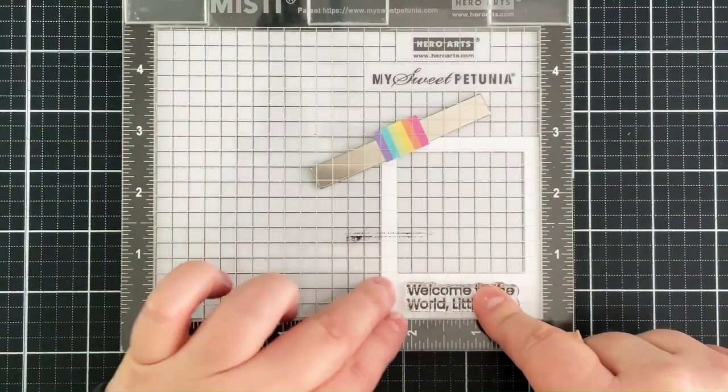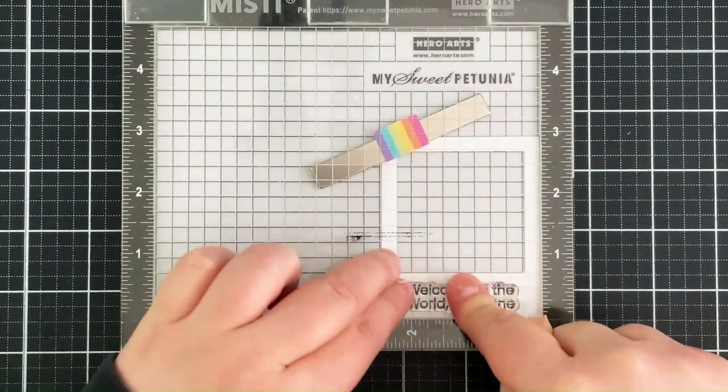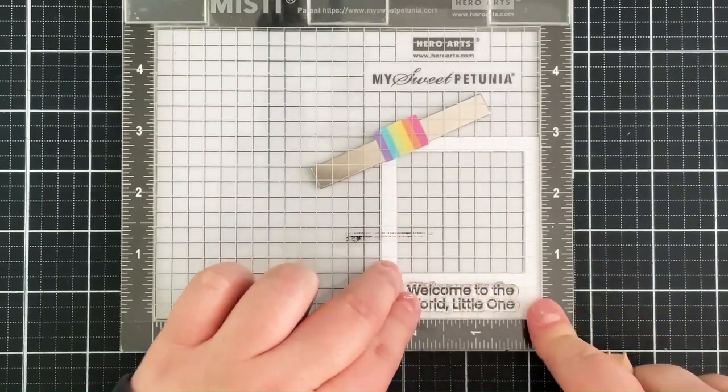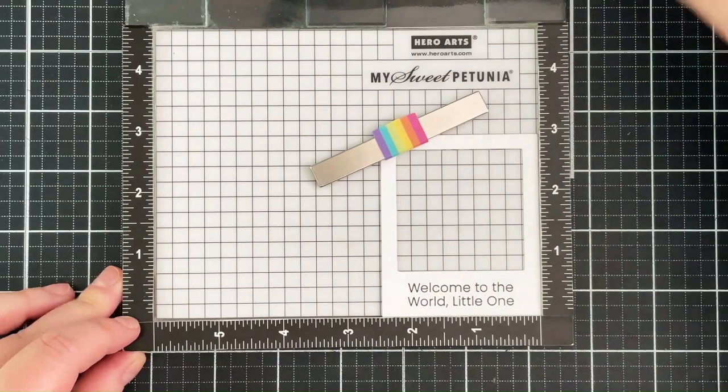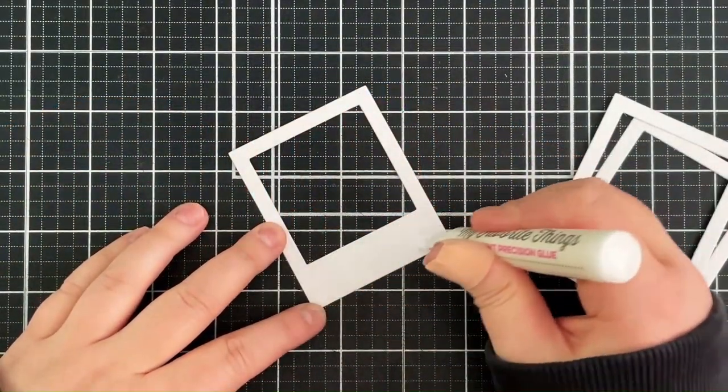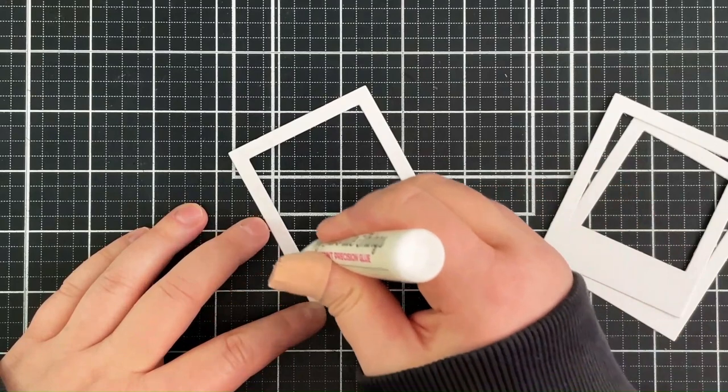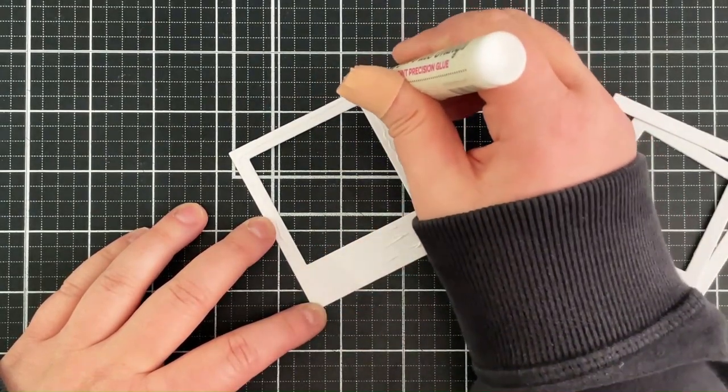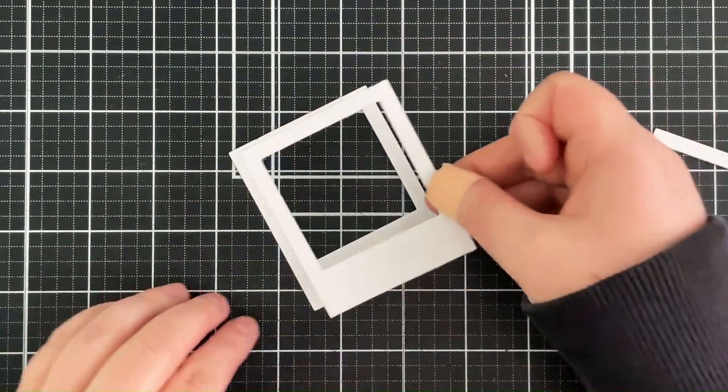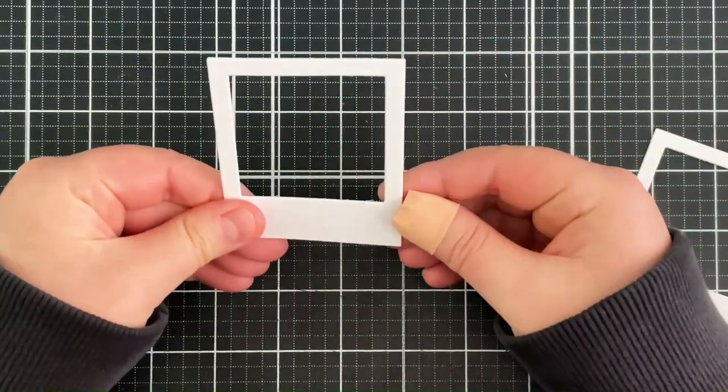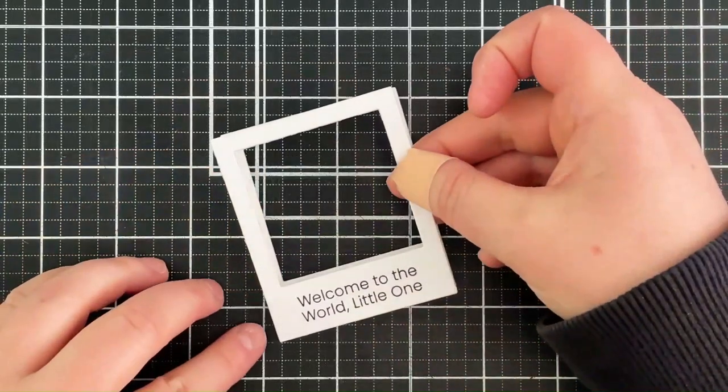I'm then stamping a sentiment from the Best Friends in the Galaxy stamp set onto one of those polaroid shaker frames. Stamp that down with some versafine clair black ink. And then now I've got those other frames that I cut, I'm adding some on point precision glue onto the frames and then I'm going to stack those up. So I'm stacking the three up that I cut just from the white cardstock and then I'm going to stack the other one on top that I added the sentiment onto. I like using the liquid glue here just so that I can move the pieces around, try and line them up as best as possible. And then I can pop the one with the sentiment on the top.